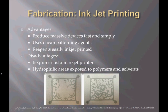The next fabrication process is inkjet printing. This is a one-step process where the surface of the paper is chemically modified and then selectively hydrophobized for the channels. Advantages include producing massive devices fast and simply, using cheap patterning agents, and reagents that are easily inkjet printed. Disadvantages are that it requires custom inkjet printers, which can be fairly costly, and the hydrophilic areas are exposed to polymers and solvents.